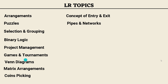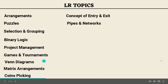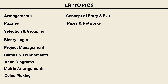Then we are going to look at games and tournaments — all the types — and then Venn diagrams, matrix arrangements, and the coins picking concept. After that we will look at the entry and exit concept and solve all the cases that come under it, and then pipes and networks. After finishing all this, we are sorted with the LR part of the LRDI section.